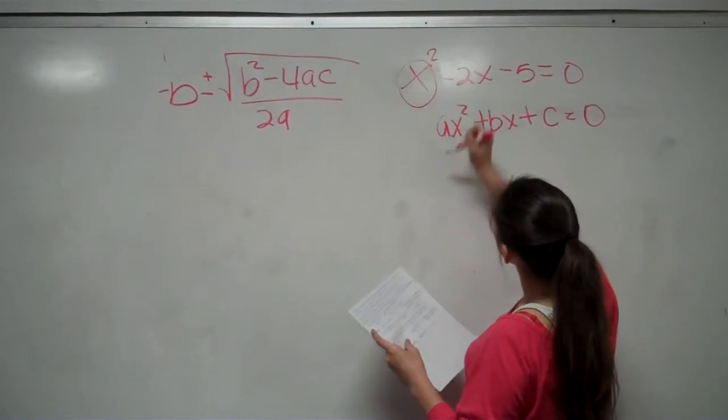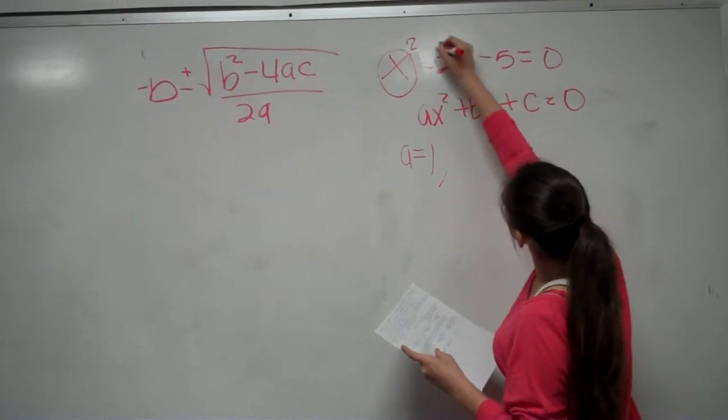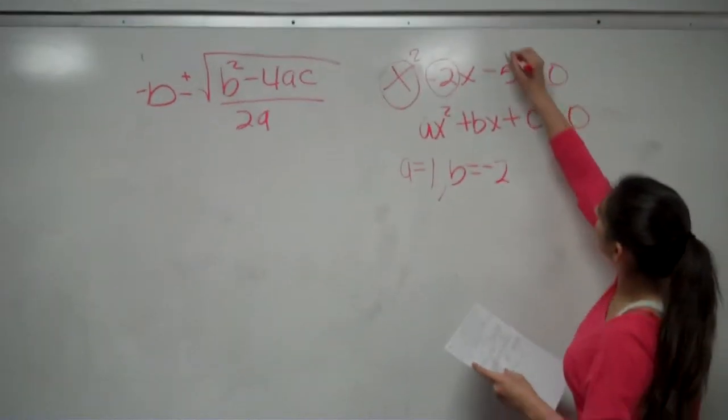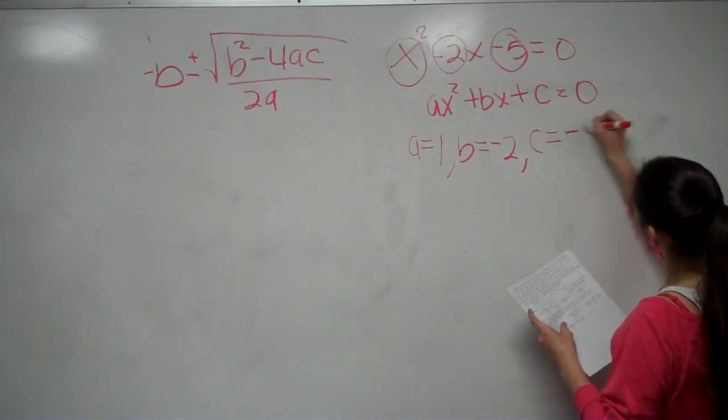So A equals 1, B equals negative 2, and C equals negative 5.